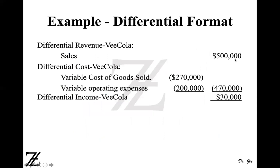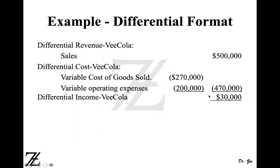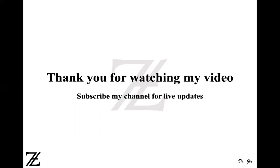In the differential format: sales $500,000, variable cost of goods sold $270,000, variable operating expenses $200,000 — total differential cost $470,000. If you don't produce Vcola, you won't incur that cost, but you also won't make the $30,000 contribution margin. So the company's operating income will drop by $30,000, the amount of the contribution margin. Discontinuing a product with a positive contribution margin reduces operating income by that amount. That completes this question.